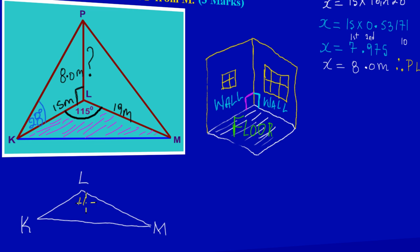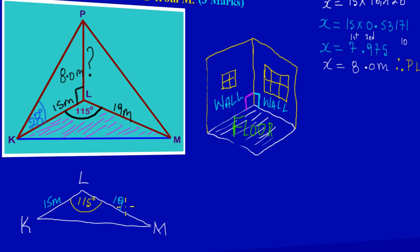They had given us the angle at L which is 115 degrees, so that would be 115 degrees there. They had given us the length KL to be 15 meters, so we insert 15 meters. LM they gave us to be 19 meters.